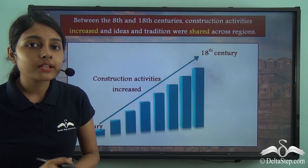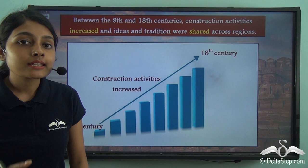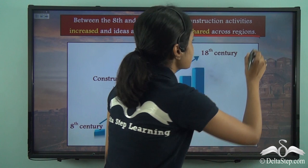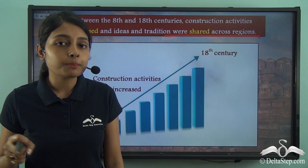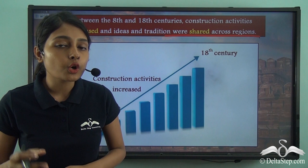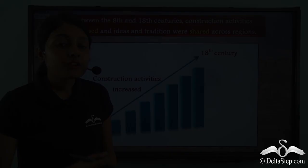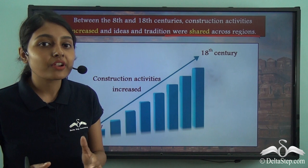During this period, ideas and traditions were shared across regions. If you see a construction in the southern part of the Indian subcontinent very similar to one in the northern part, this lesson explains why — because ideas and traditions were shared among various regions. Various rulers were inspired by former rulers and made very similar architectures, one such example being the Bibi Ka Maqbara.